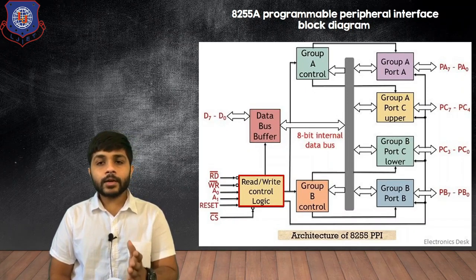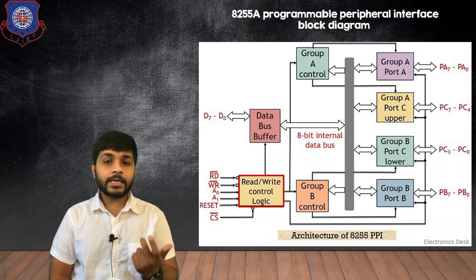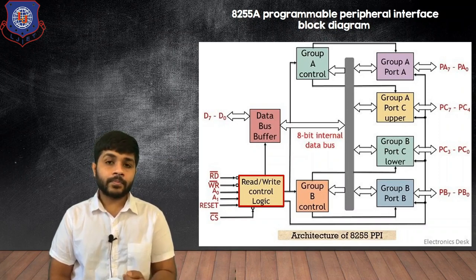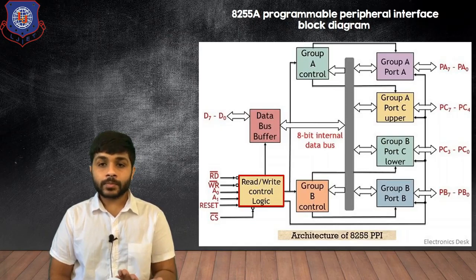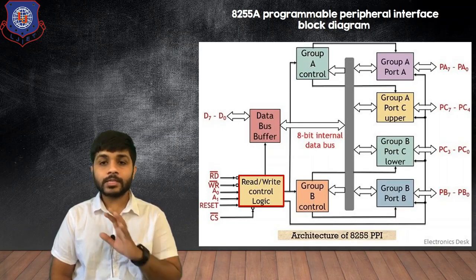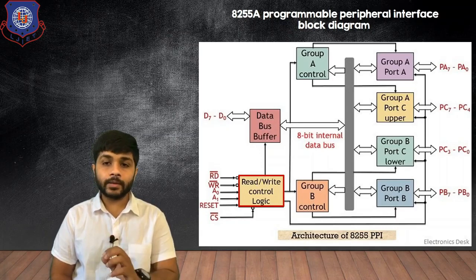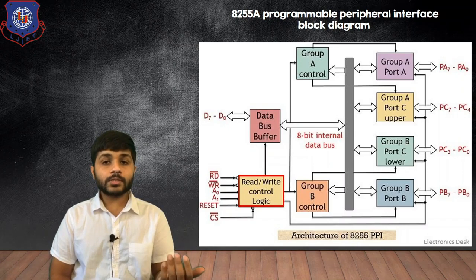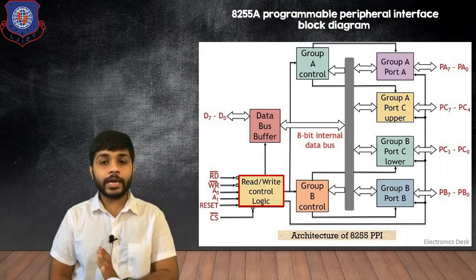The next block is the read-write control logic. In the read-write control logic there are different pins: read bar, write bar, A0, A1, reset, and chip select bar. The read bar and write bar are control signals used by the microprocessor. When the microprocessor sends the read control signal, the 8255A will be read, meaning data in the 8255A will be transferred to the microprocessor. When the microprocessor sends the write bar control signal, data from the microprocessor will be transferred to the 8255A.